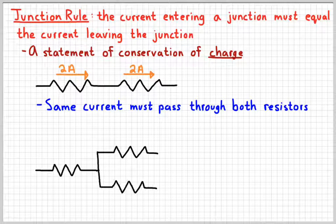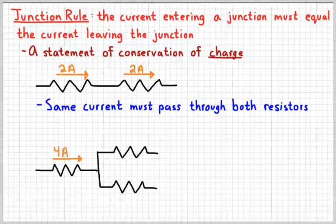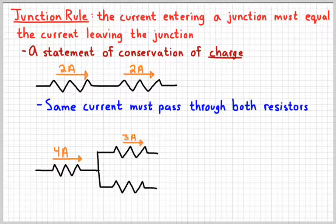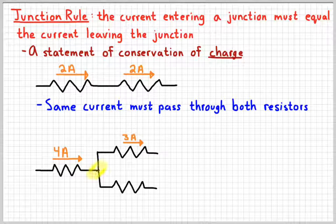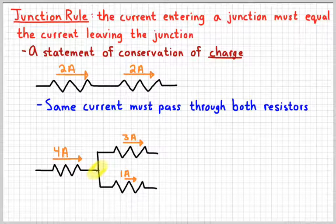Consider a set of resistors like this. Suppose that four amperes goes through that resistor and three amperes go through that resistor. Since four amperes enter the junction right here, then four amperes have to leave that junction, meaning the bottom resistor would have a current of one ampere running through it.